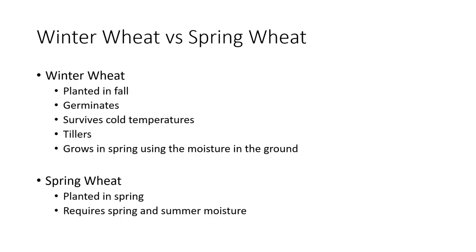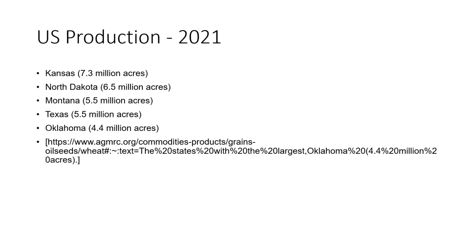Spring wheat is planted in the spring and harvested in the late summer to early fall. Spring wheat requires spring and summer moisture. In the U.S., production of spring wheat is in the Dakotas, Minnesota, and parts of Montana.